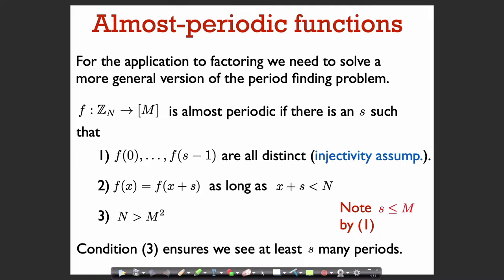A function is almost periodic if there's an s such that f of 0 through f of s minus 1 are all distinct. So that's the same assumption that we had in the simple periodic case. One change here is the second condition: we only have that f of x is equal to f of x plus s as long as x plus s is strictly less than n. So this function may not wrap around properly, as we'll see in an example on the next slide.